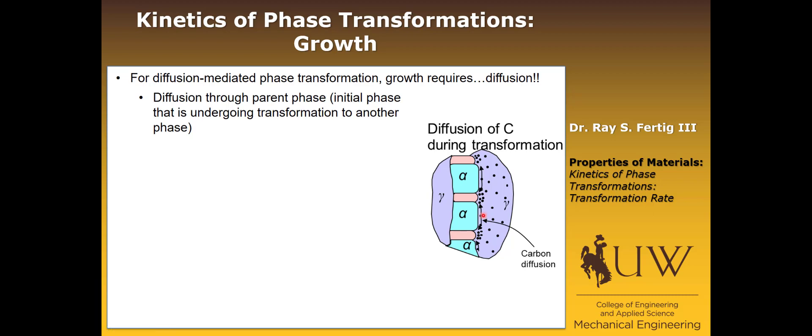The next is that we're going to require diffusion through the phase boundary. And then finally, we're going to require diffusion into the actual nuclei that exists. So into those growing nuclei, we have to have diffusion of carbon. So there's three different types of diffusion that are occurring, at least in a solid phase transformation.